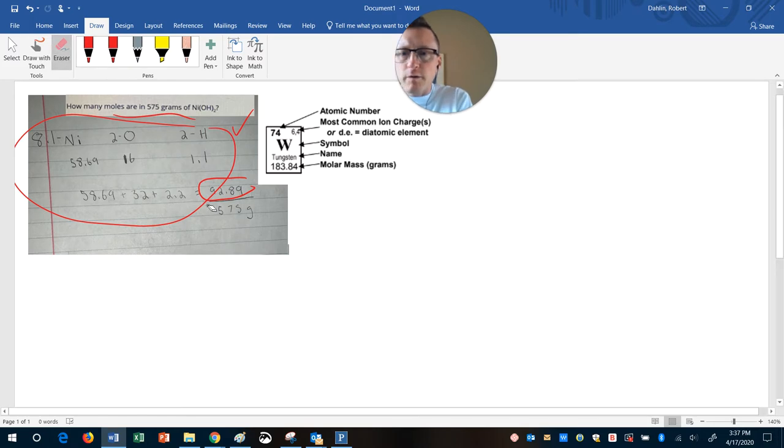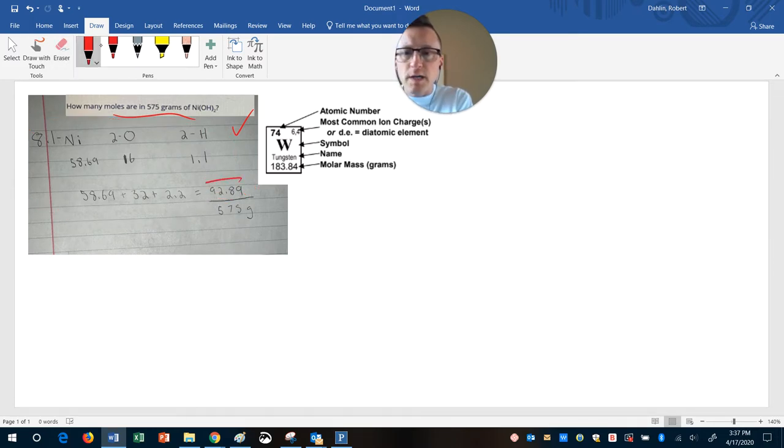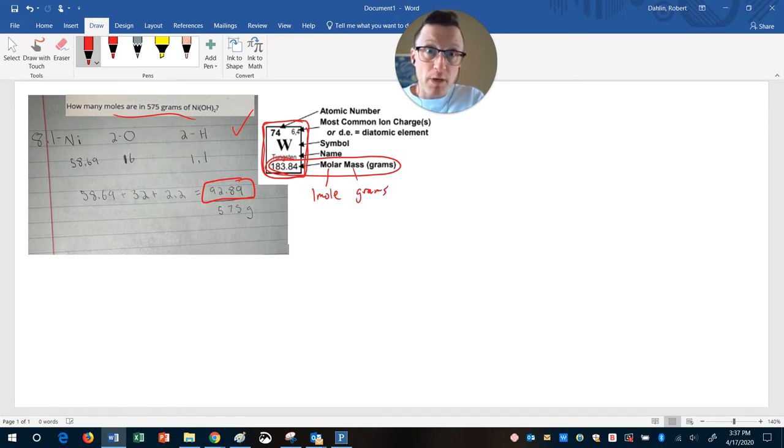I think where your confusion is coming in is what this 92.89 number represents. Keep in mind when you're doing things from the periodic table, those boxes, remember there's that key on your periodic table. These numbers on the bottom are what we call a molar mass. Think about what that phrase means. Molar means related to one mole, and mass is your grams. That's an important concept, because what that means is that this number right here is how many grams you would have if you had one mole.